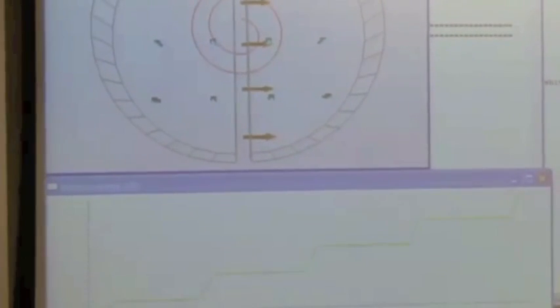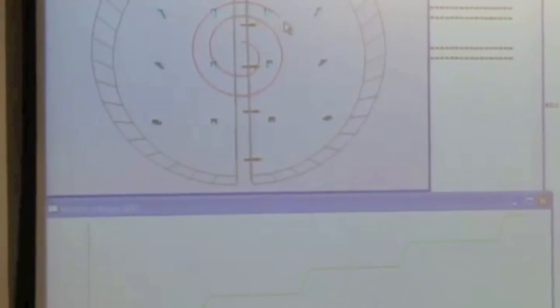And so we keep increasing the speed of this proton, changing the direction of the electric field every so often so that we give it the boost in the correct direction. But the magnetic field keeps it trapped, keeps it moving around in a circle. So every time it goes through the electric field, it gets a boost of energy.